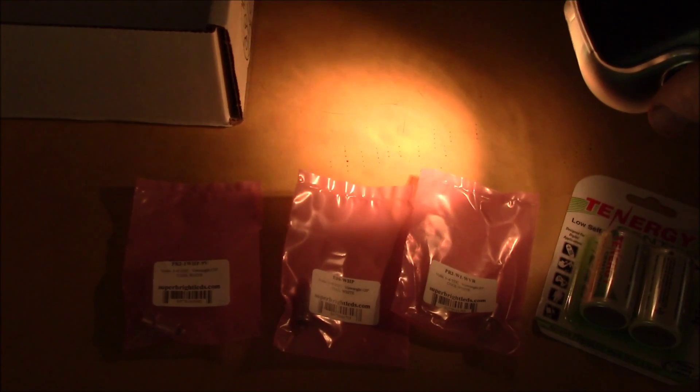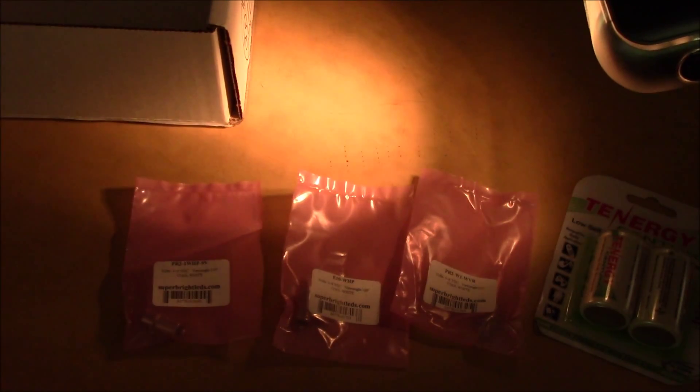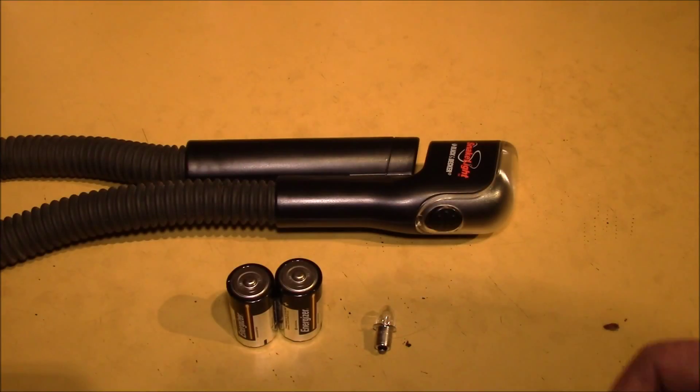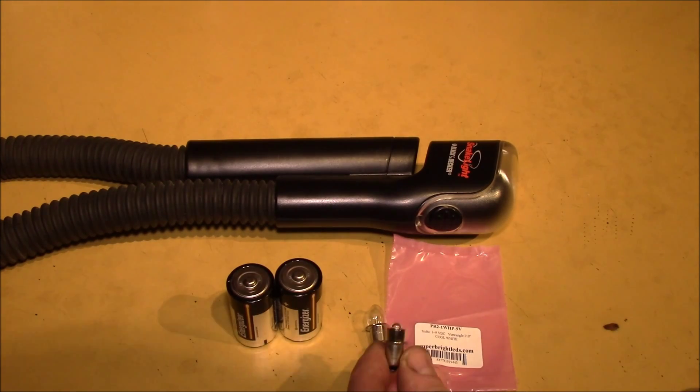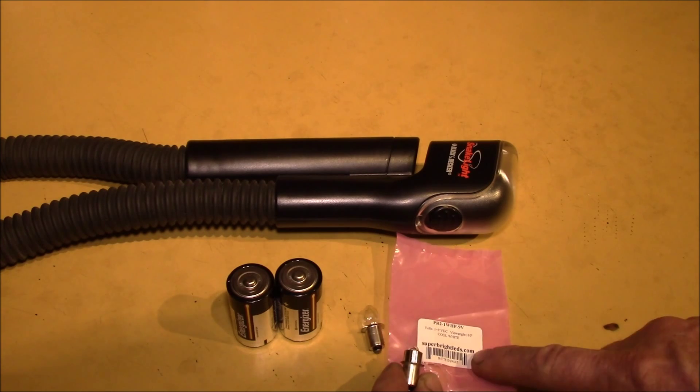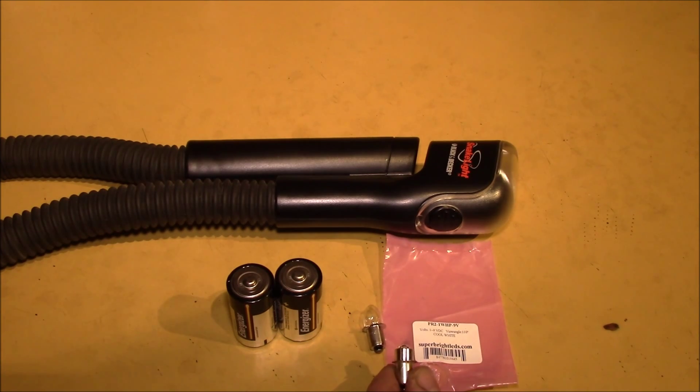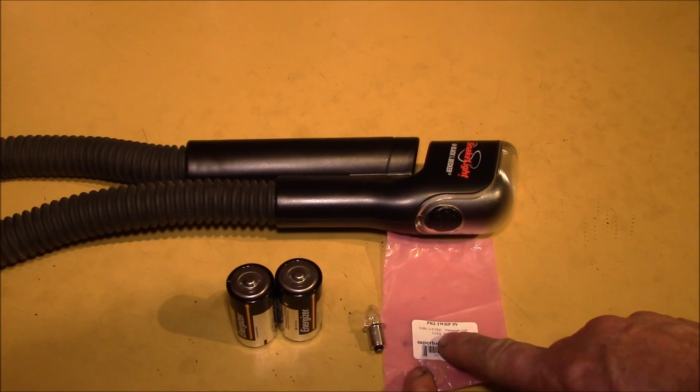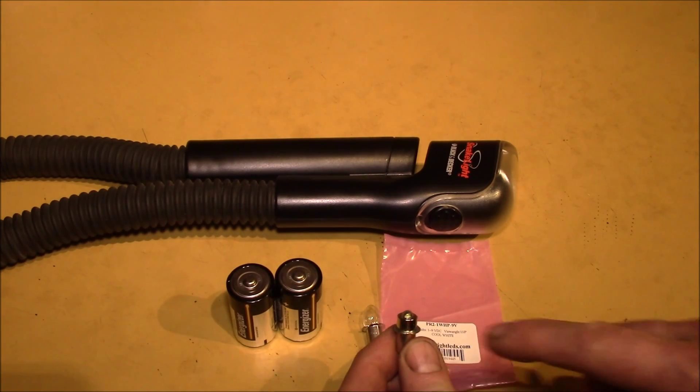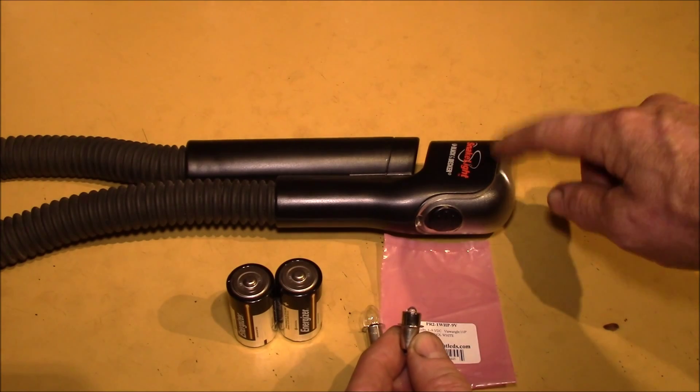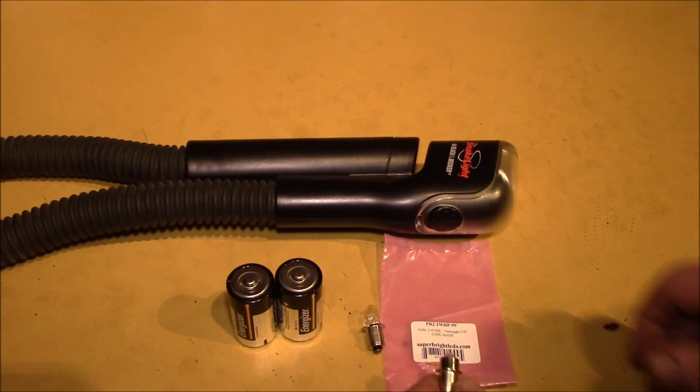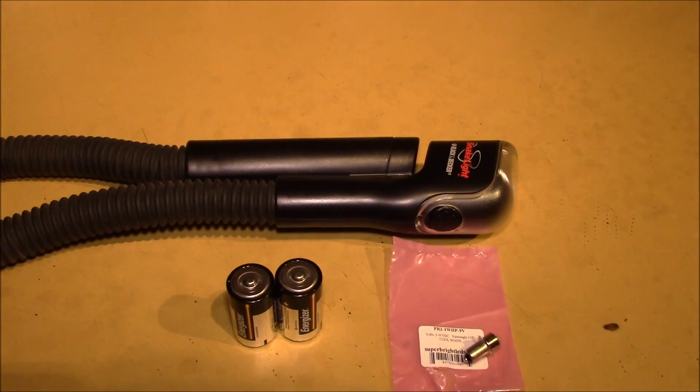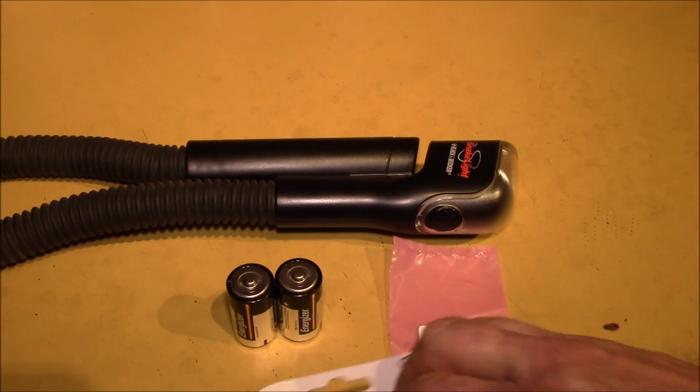I could put in one of these - a one-watt LED from superbrightleds.com with a PR2 base that works from one to nine volts. It's one watt and 100 lumens, compared to 44 for the new snake light.